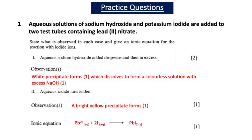With aqueous sodium hydroxide added dropwise and then in excess, you would form a white precipitate, which dissolves to form a colourless solution with excess sodium hydroxide. The observation with aqueous iodide ions would be a bright yellow precipitate. The ionic equation is: Pb²⁺(aq) + 2I⁻(aq) → PbI₂(s).